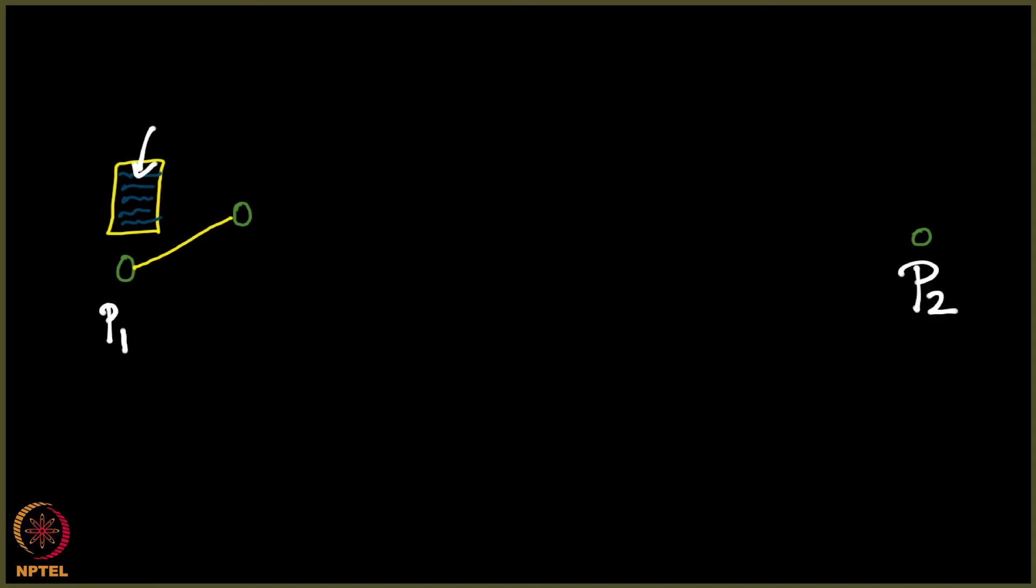P1 suspects that this particular A1 might know P2, and this A1 should then pass it on to P2. Again the same story - he may not know P2, so what he does is he chooses someone. This particular A1 chooses someone exactly the way P1 did and sends this letter to A2, asking him to pass this letter to the destination which is P2.